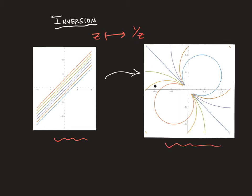So the line going through the origin, right here, gets mapped to this line, while these other lines parallel to it get mapped to various circles.